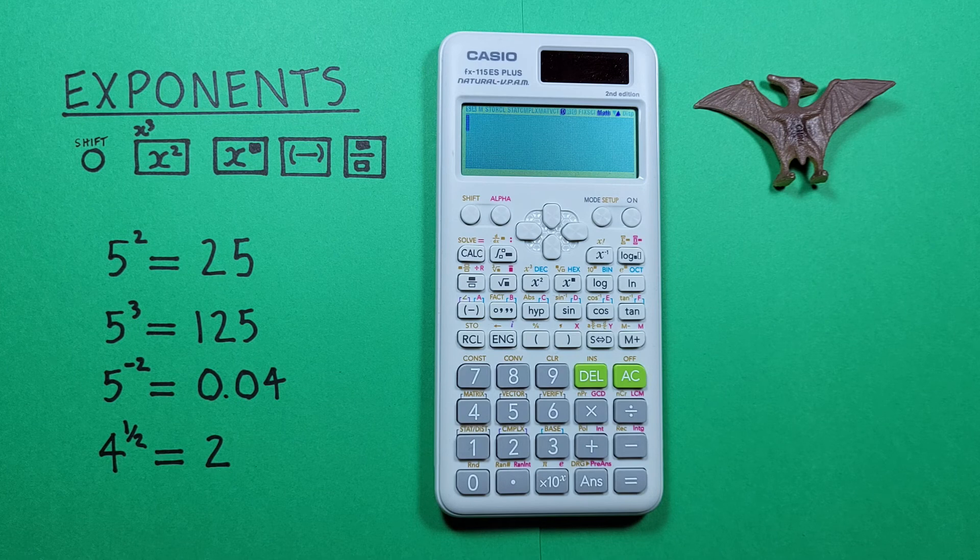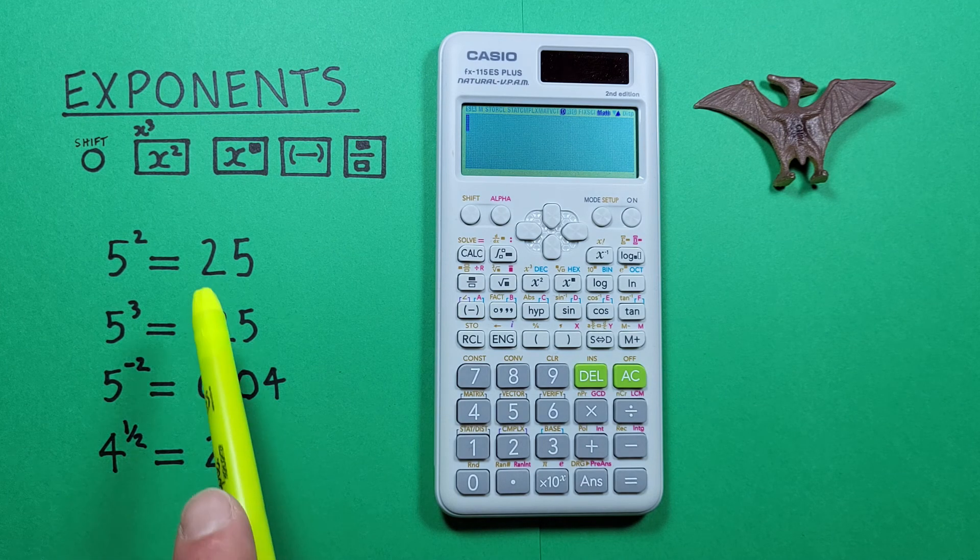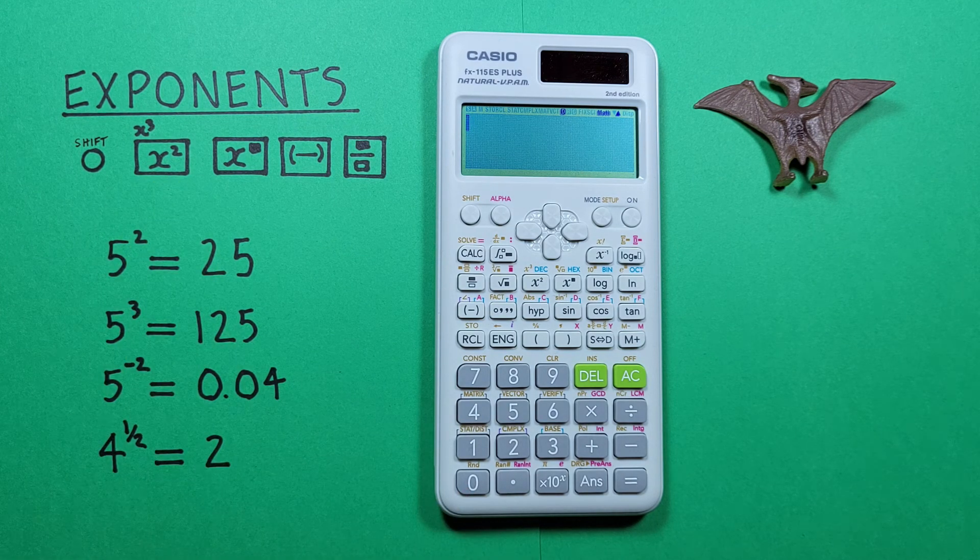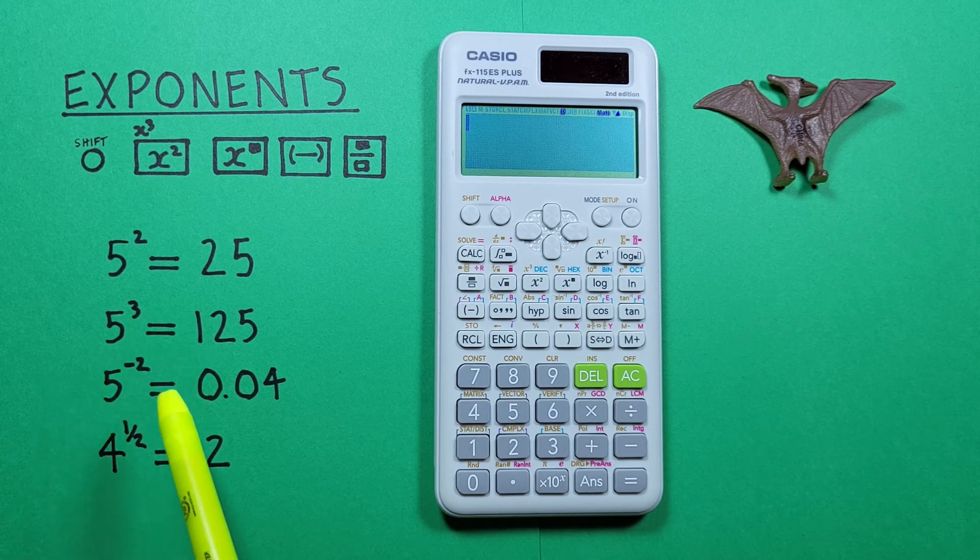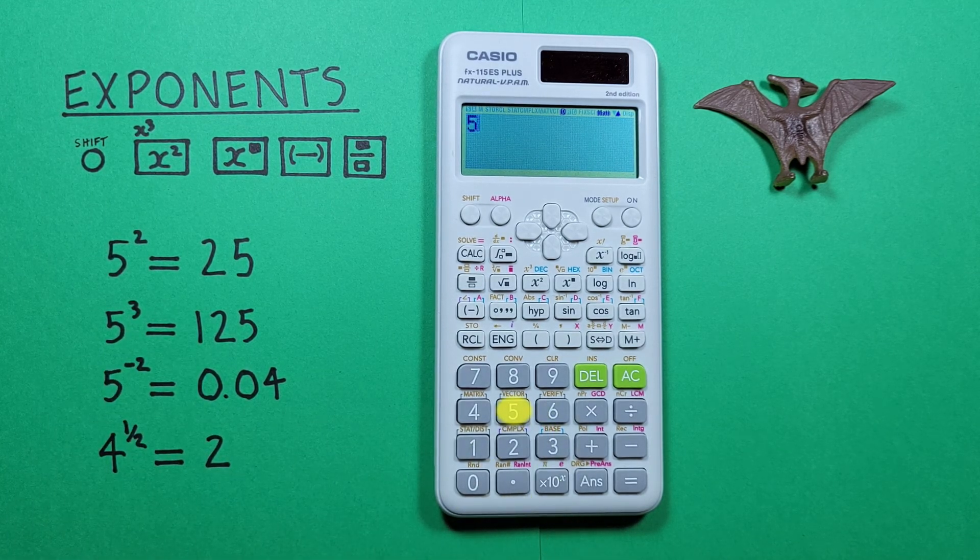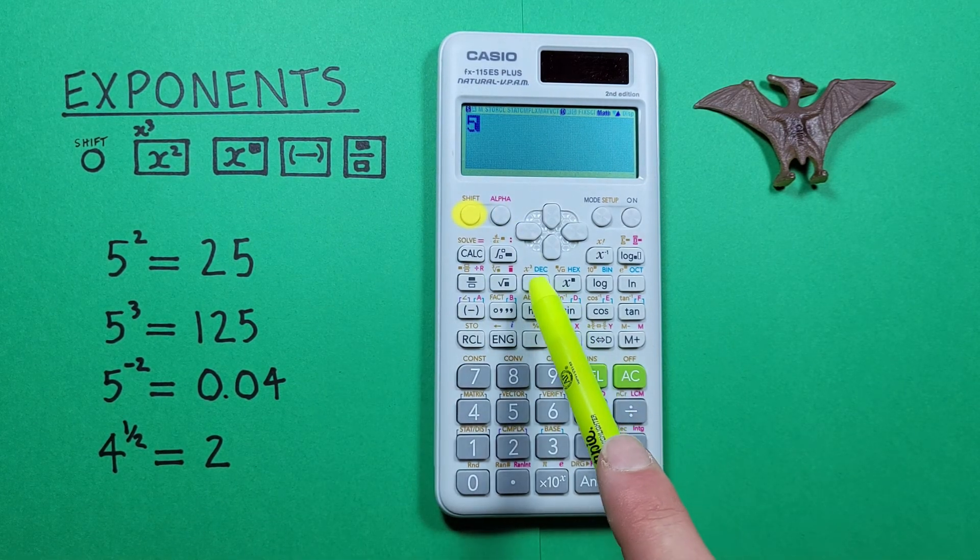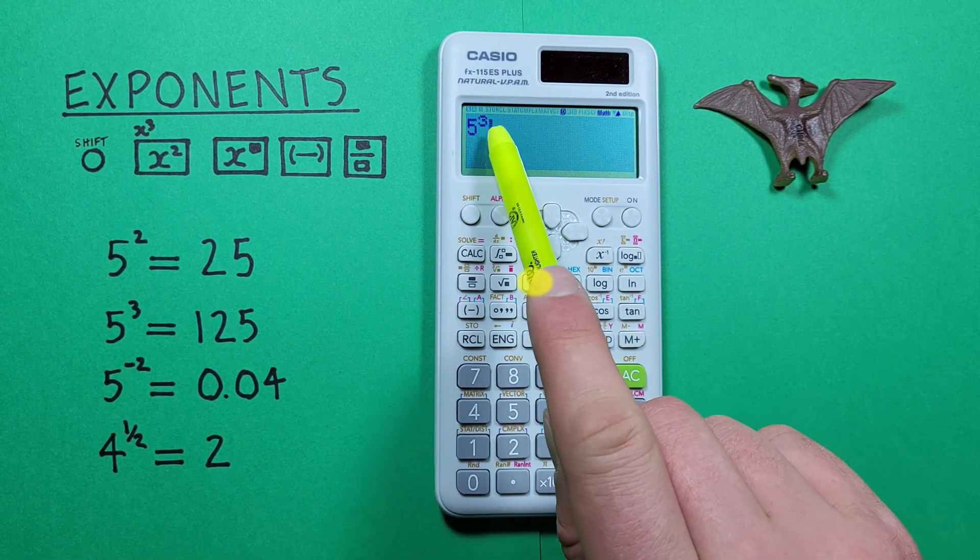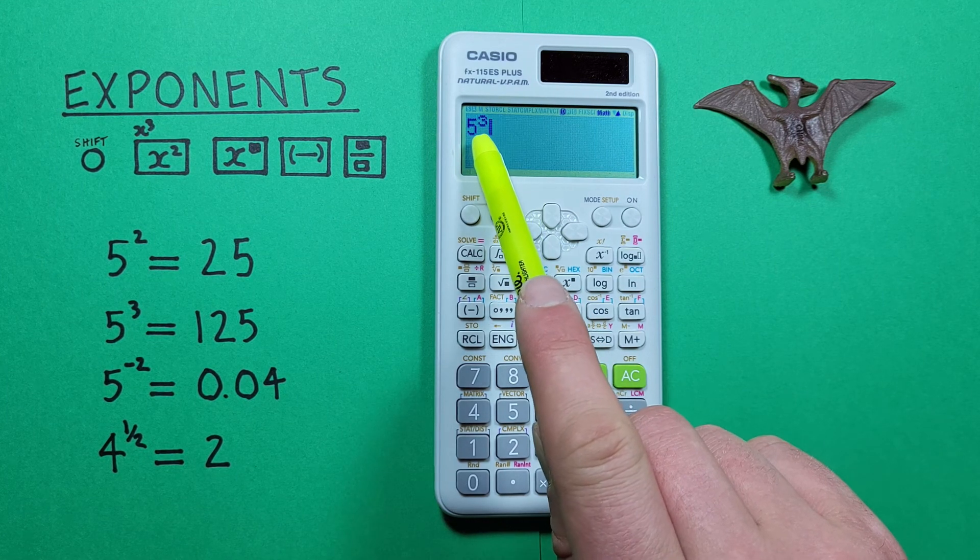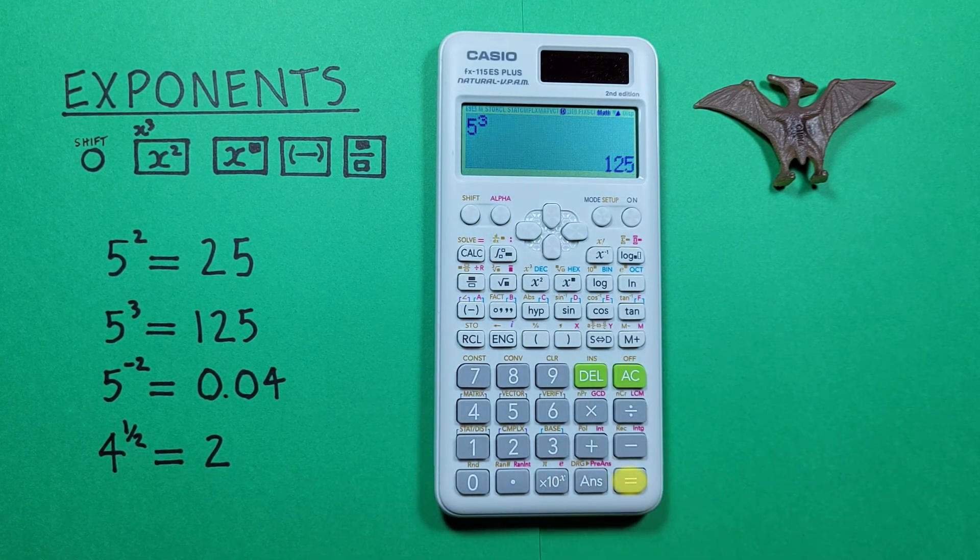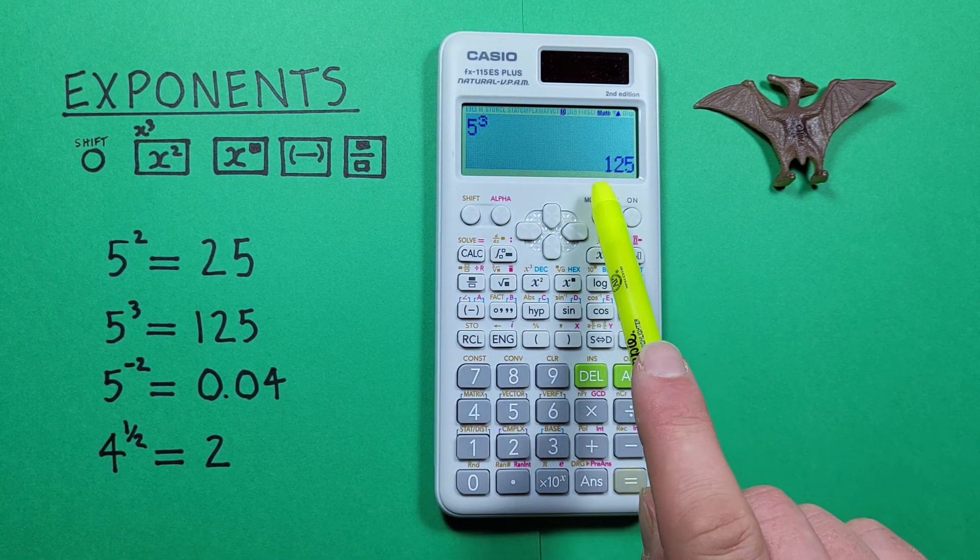If we want to cube a number, we use the shift function of the squared key. So again, let's say we want to do 5 cubed. We place 5 on our screen, press shift, and then the x squared key, and we see a 3 in the exponent there. Press equals, and we get a result of 125.